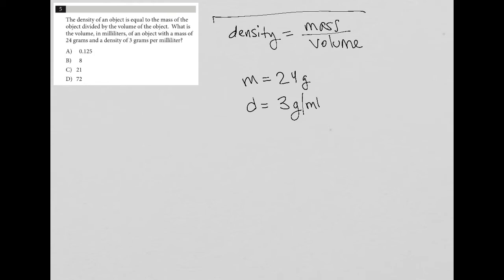If I use this formula that was given to me in the first sentence, instead of density I have 3, instead of mass I have 24, and then the volume or V is what I'm looking to find.